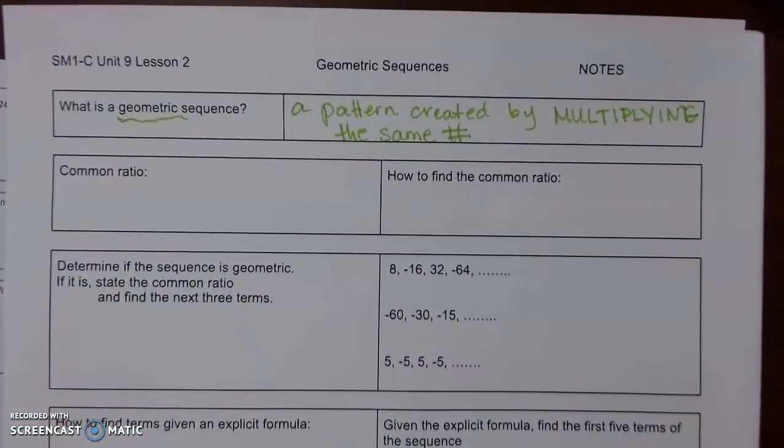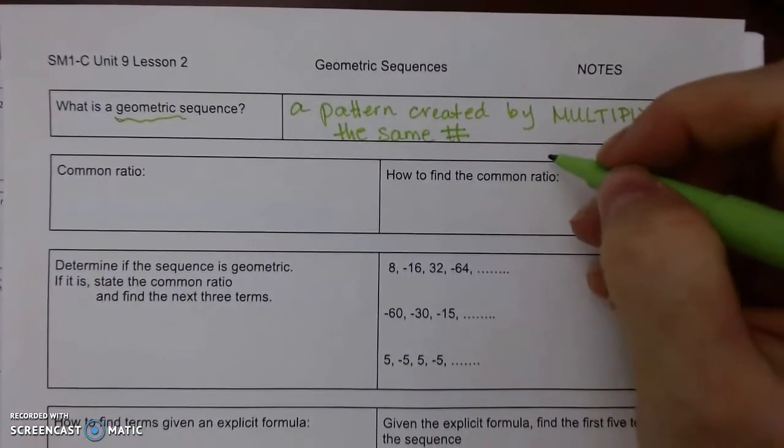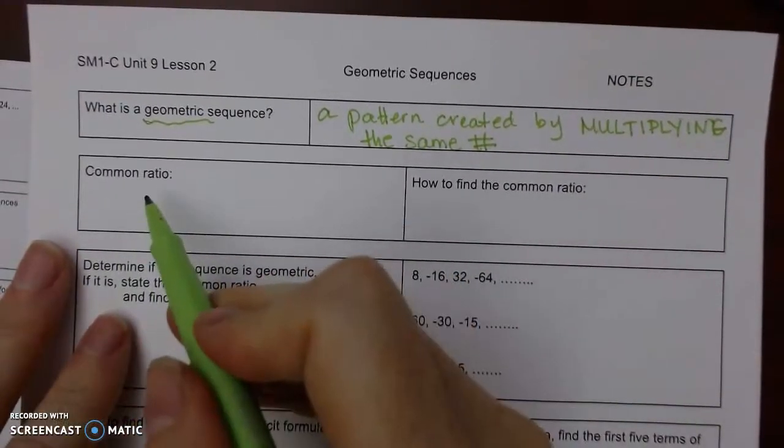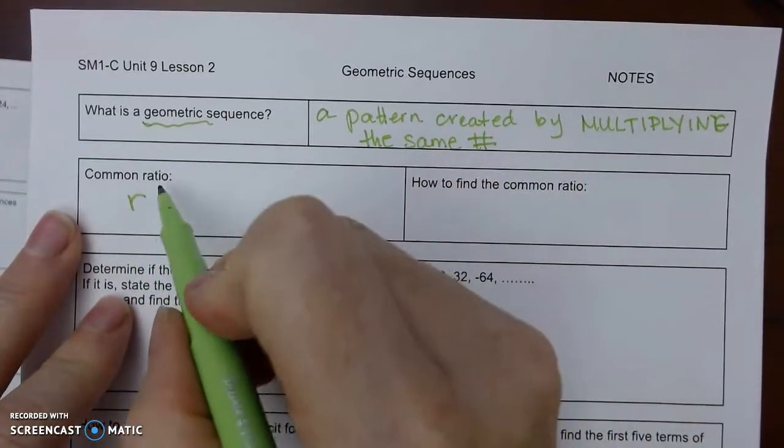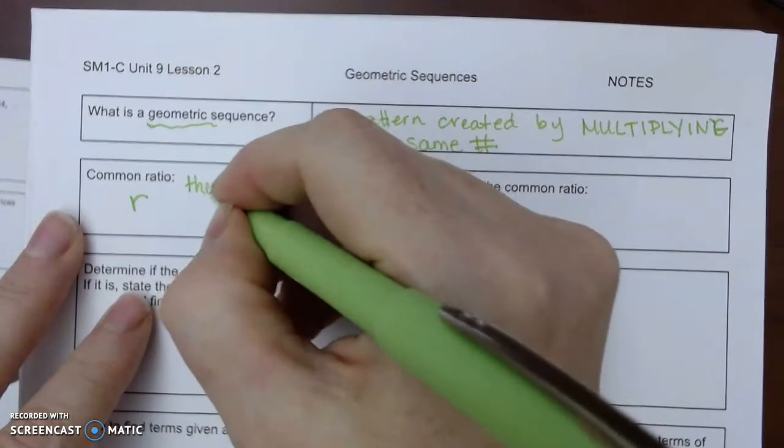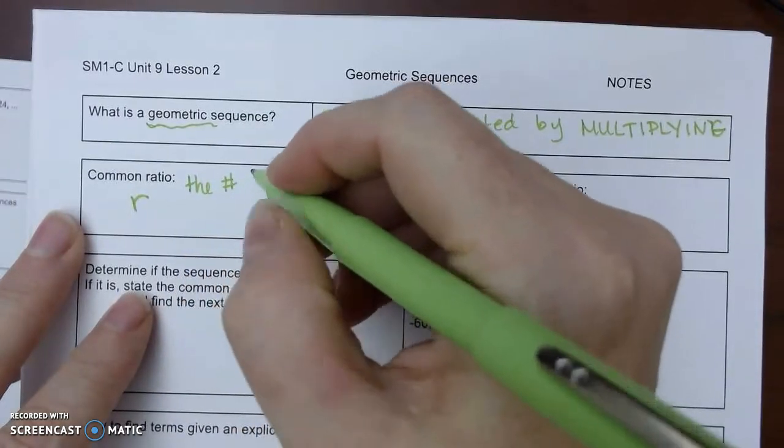If you remember, if you divided by 3, that means you multiplied by 1/3. So the common ratio, which is a lowercase r, that is the number that is being multiplied to get each next term.